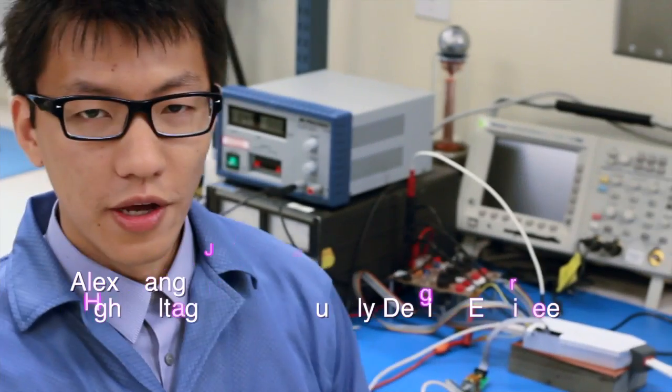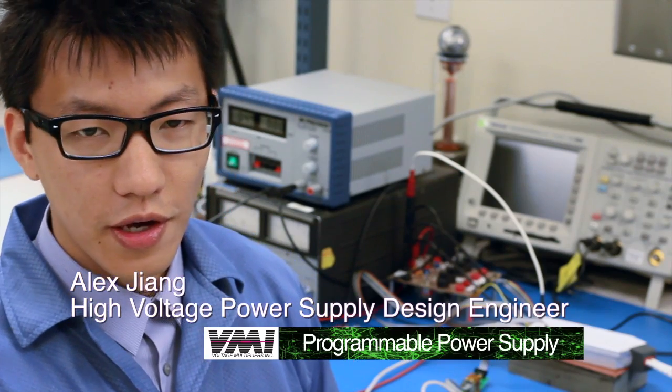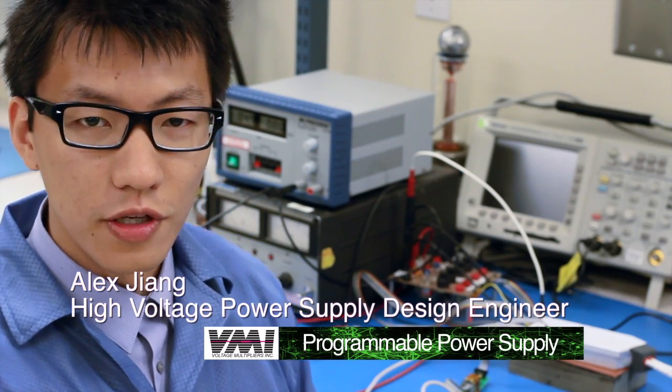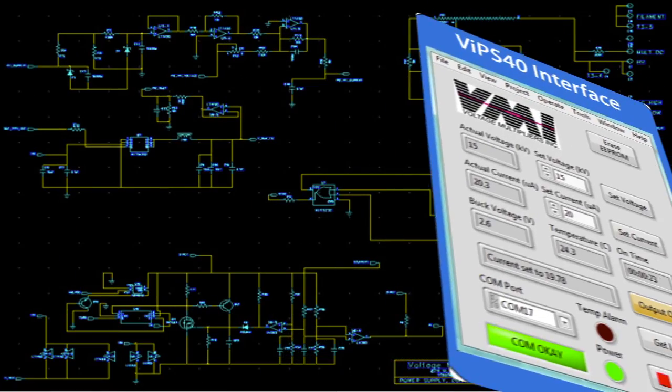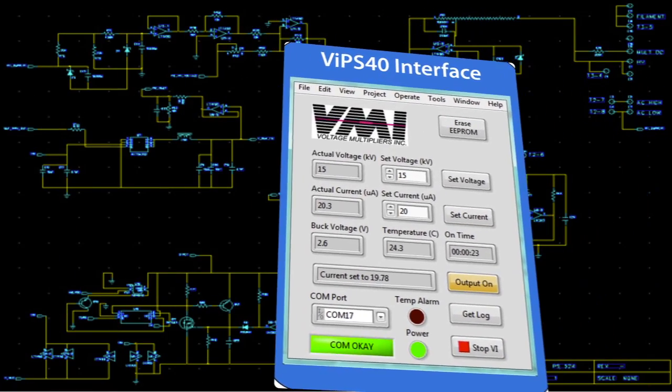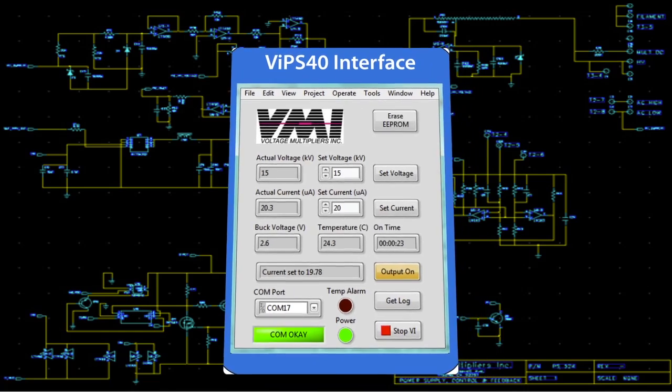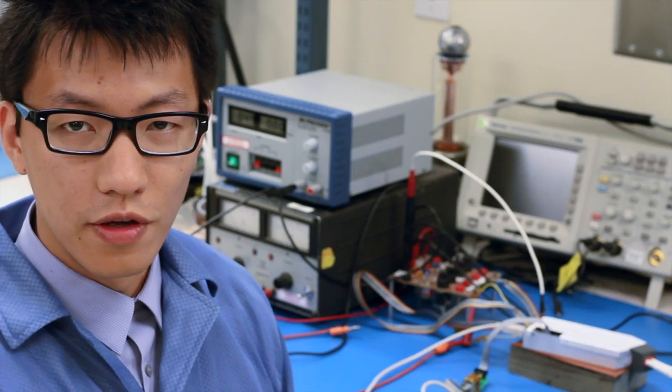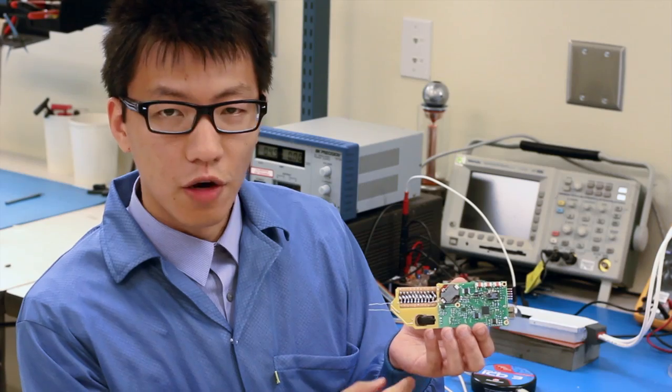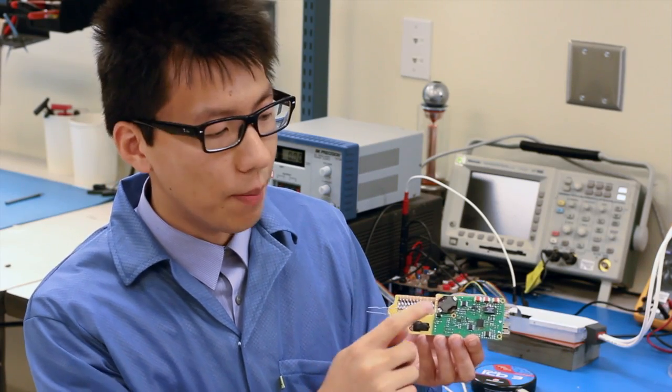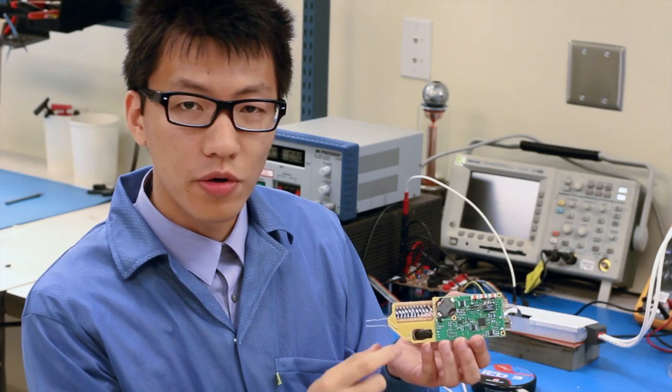So that's really what sets us apart from other optocouplers. Today we are presenting you the VIPS HV digital power supplies called VIPS40. The input range of this power supply is 6V to 10V. The output capability is 4KV to 40KV with a maximum current sourcing capability of 200 microamps. The core technology of this power supply is based on a microchip DSP microcontroller.